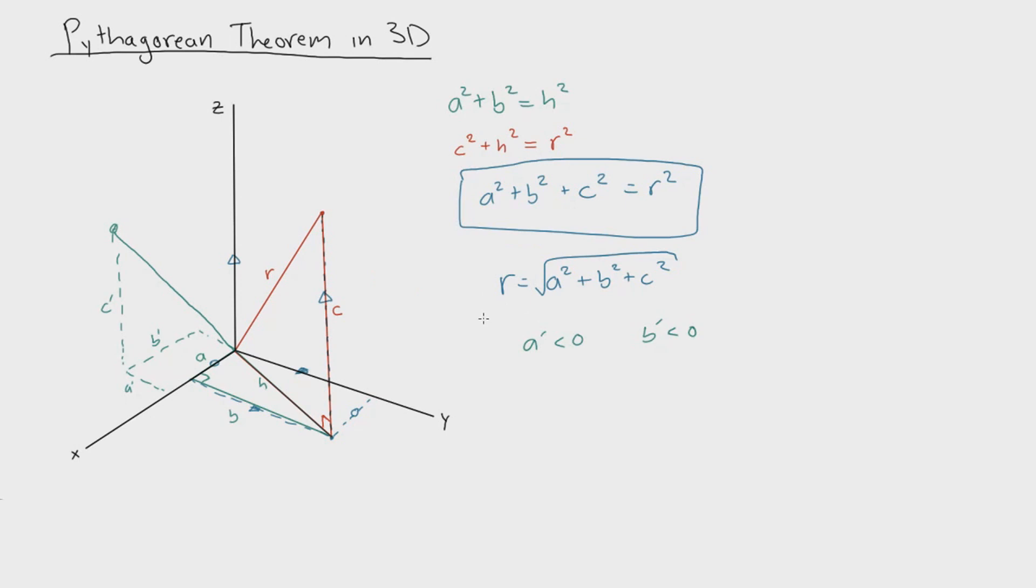So a, b, and c can also be negative, it doesn't matter. It ends up being positive when you do the calculation. This right here is the main thing of this video. a squared plus b squared plus c squared equals r squared. So hopefully this helped you guys. I'll see you in the next video.